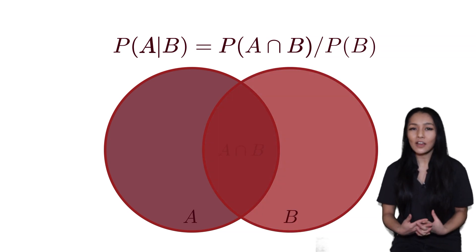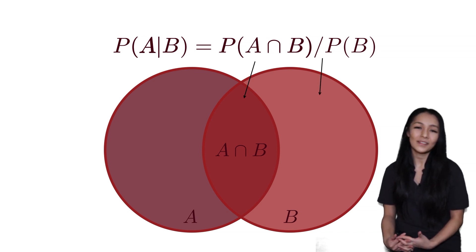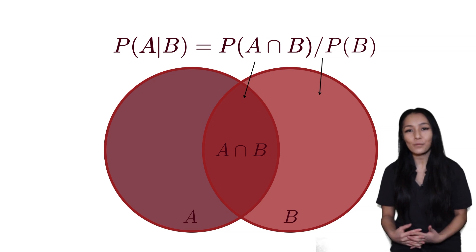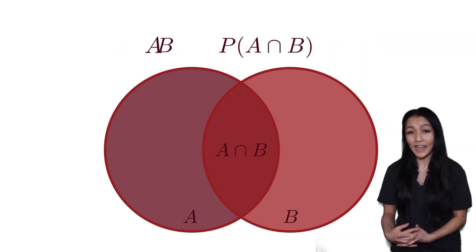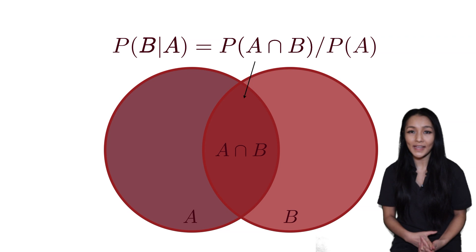In this case, imagine we have two dependent events A and B. We can write the probability of A given B is equal to the probability of both A and B, the joint probability of A and B, divided by the probability of B. Similarly, we can write for the conditional probability of B given A that it is equal to the joint probability of A and B divided by the probability of A.